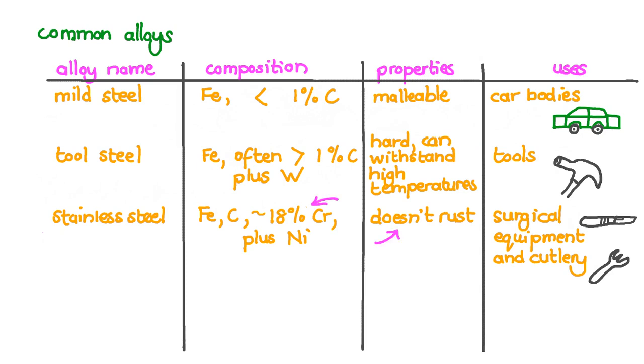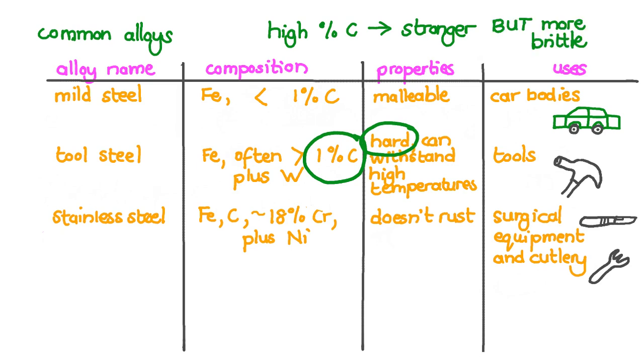Stainless steel usually has a relatively high percentage of chromium as well as other elements like nickel. These prevent this steel from rusting or corroding. Surgical equipment like scalpels as well as cutlery for eating are usually made from stainless steel. It's important to remember that a higher percentage of carbon makes steel stronger but also makes the steel more brittle because it is less malleable.